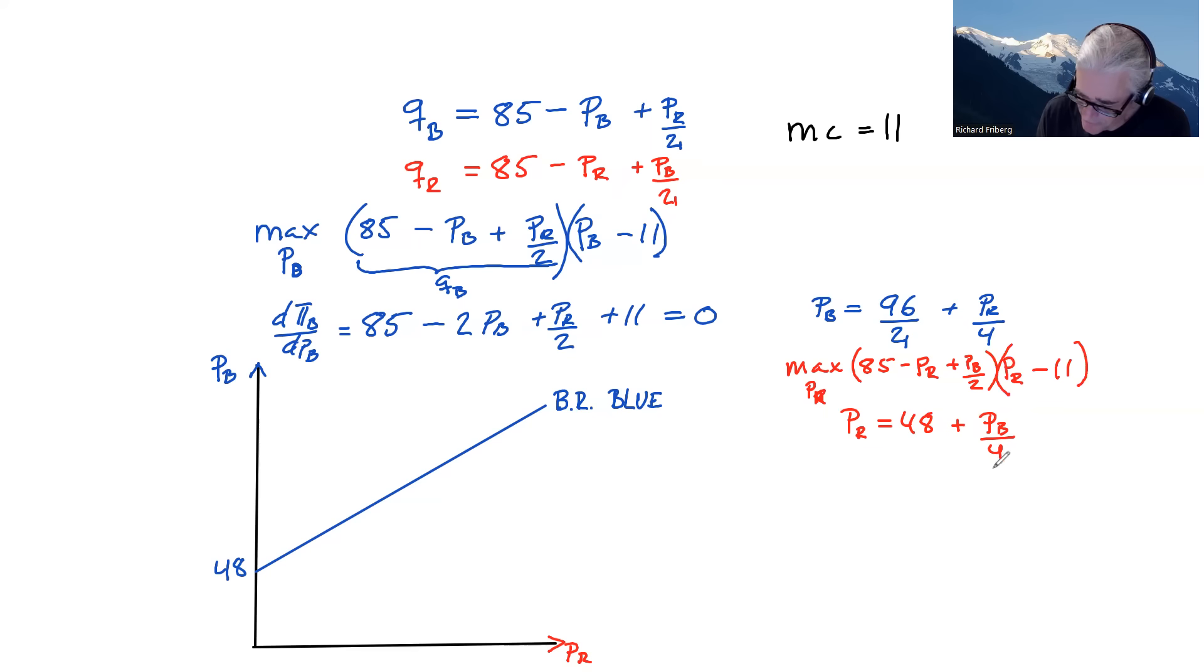So move over the 48 and multiply by 4, which means that we have PB equals to 4 times 48. I'm not going to do that in my head right now. Plus PR times 4. And that should be a little minus sign there, since we moved it over from the other side. So we can draw that as well. So the intercept is going to be way down here, minus sign, and then it's coming up like this with the slope of four. And that's the best response function for red.